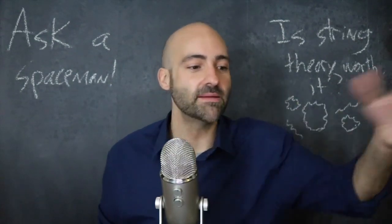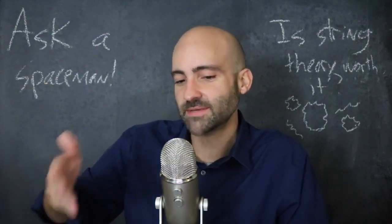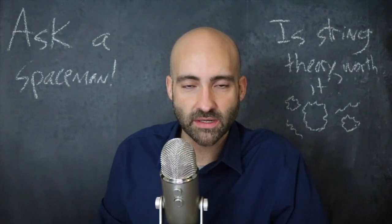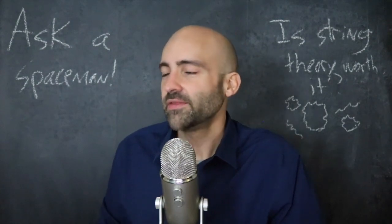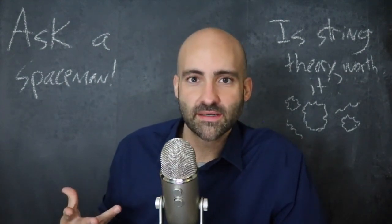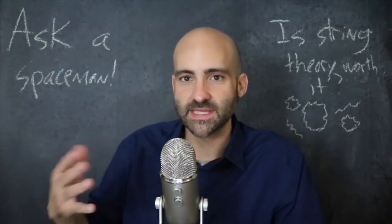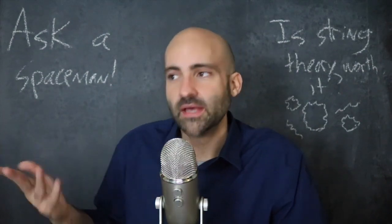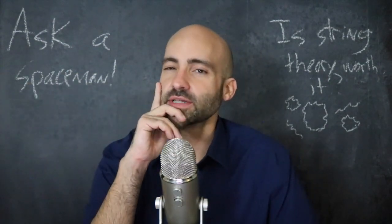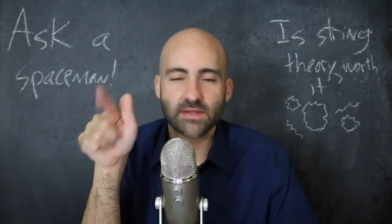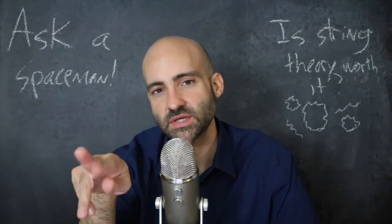Some kinds of particles get half-integer spins — like half or three-halves. Things like electrons have spin one-half. Then there are particles like photons, the W boson, or gluons, which have what's called integer spin: spin zero, spin one, spin two. These are two different families of particles with two different kinds of spins. And it turns out, buried in the mathematics, that there might be a symmetry between these two kinds of particles.